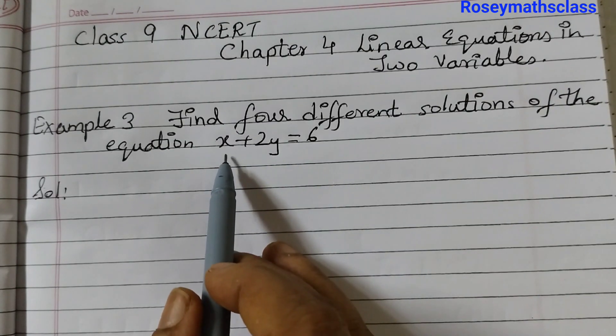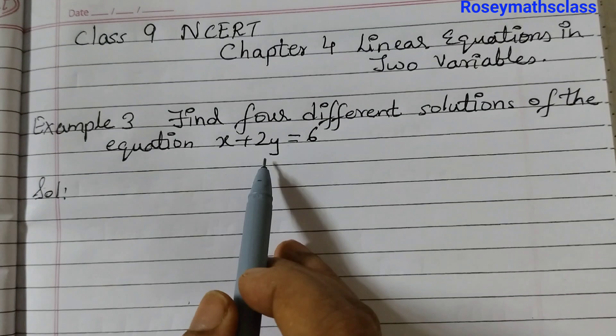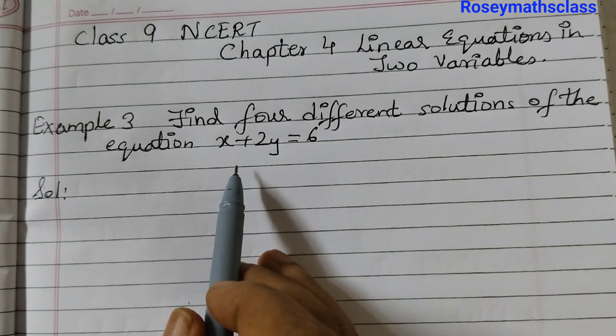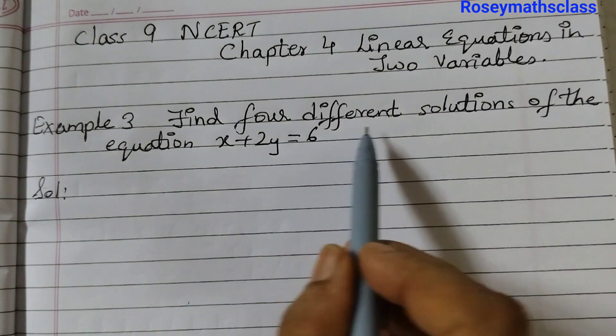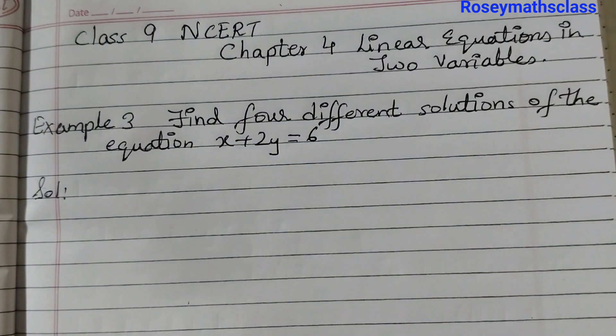So this is a linear equation in two variables x and y and we know that this type of equation can have infinitely many solutions. Any number of solutions and we just need to find out four different solutions. So let's start.